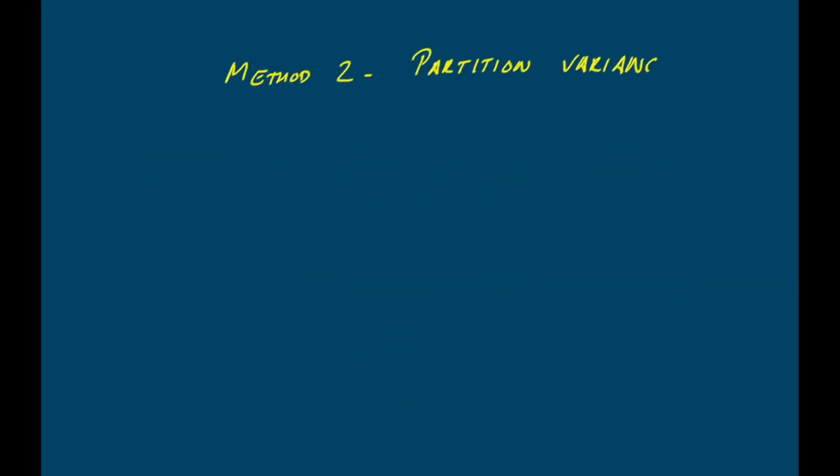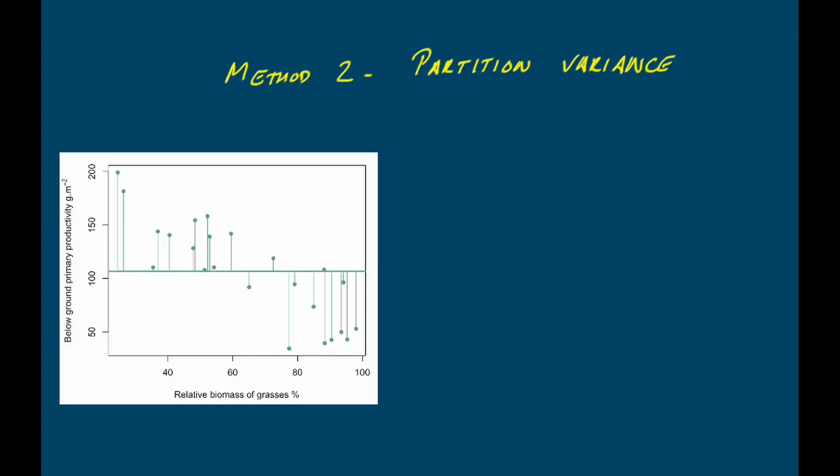We're going to partition the variance in our response variable — our y variable — into the variance we can explain with our line and the variance we can't explain. Let's start by thinking about the total variance in our y variable. I've calculated the overall mean of y and drawn in the distance from each data point to that value. To calculate the total variance, we subtract that mean from each data point, square the result, and add them all together — that gives us the total sum of squares for y. Because this is a variance partitioning exercise, we just take the sum of squares rather than dividing by degrees of freedom.